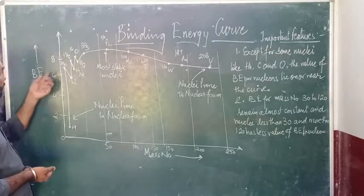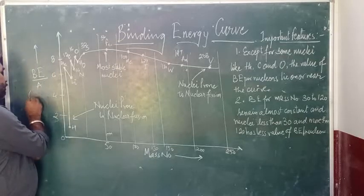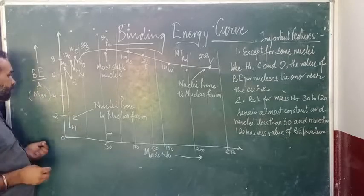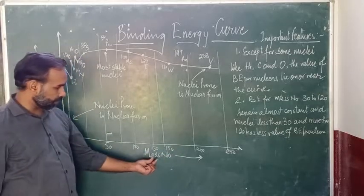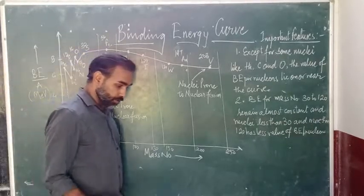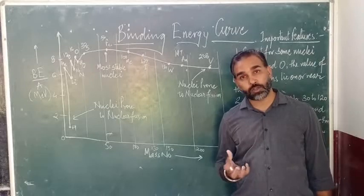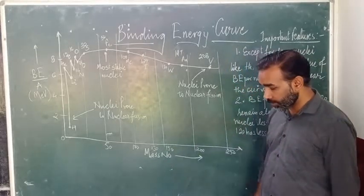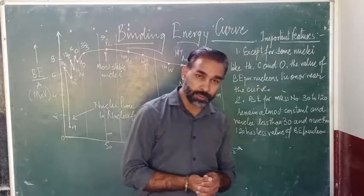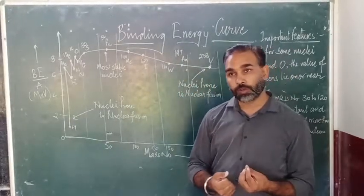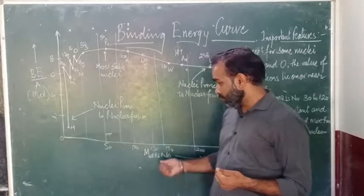This graph is basically drawn between two parameters. On the y-axis, you can see binding energy per nucleon, given in Mega Electron Volt, which we have already calculated. On the x-axis, the graph is drawn on the basis of mass number. Mass number is the sum of protons and neutrons, and they constitute the nucleus. So therefore we describe this on the basis of mass number and binding energy per nucleon, because the nucleus consists of protons and neutrons — they are called nucleons.